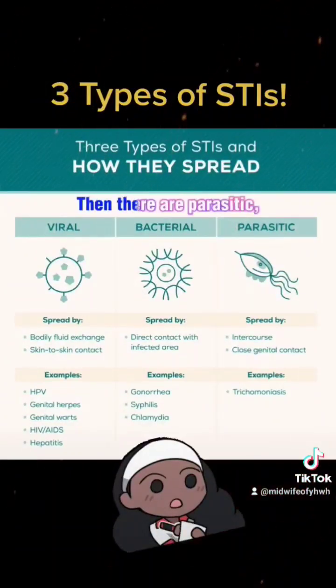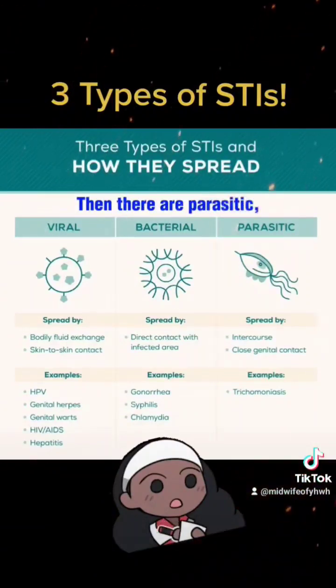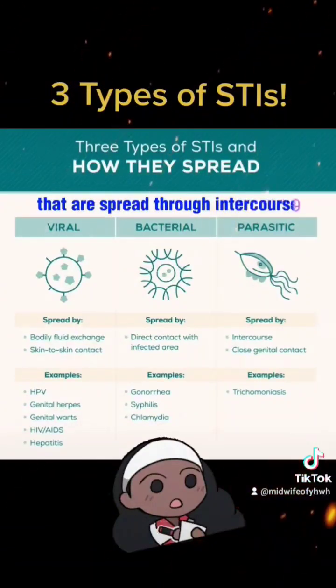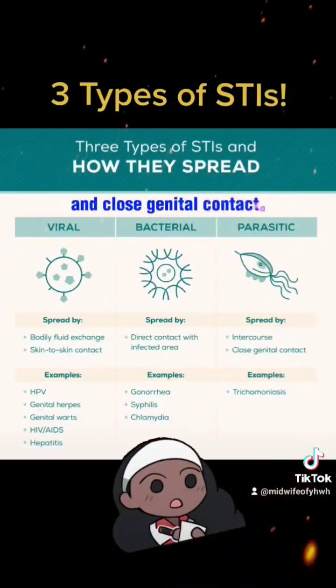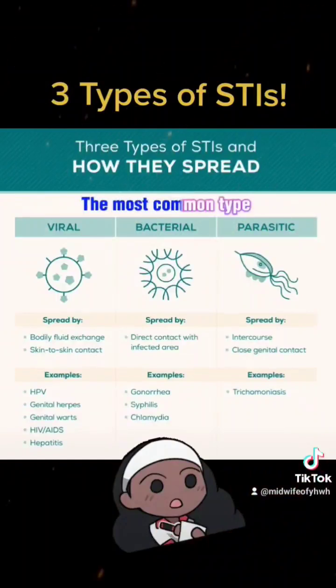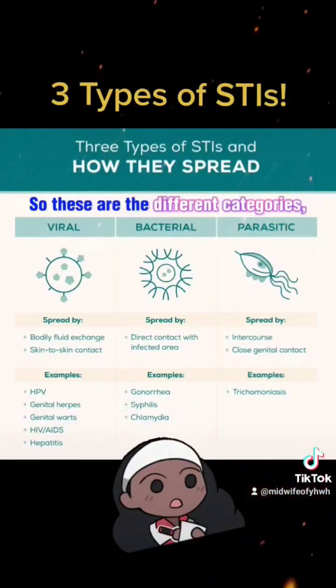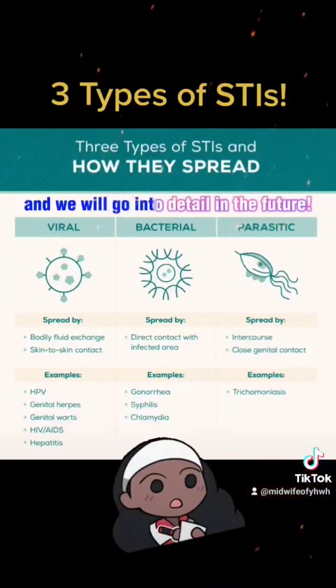Parasitic STIs are spread through intercourse and close genital contact. The most common type is trichomoniasis. These are the different categories, and we will go into detail in the future.